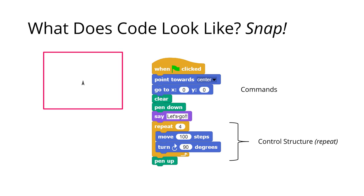So what does code look like? Let's start with something designed for high school students called Snap. These are block-based programming languages for teaching kids to code. In Snap, to the left you can see the stage with a little arrow, and we can write code to control that arrow. We can see there are commands — for example, 'point towards' — and there are control structures.